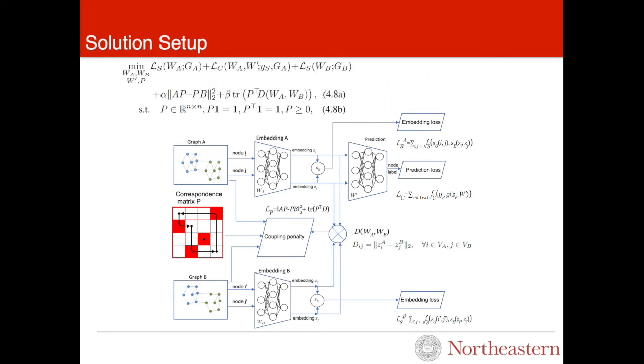Our overall objective looks like this. The objective jointly determines the embedding of nodes in two graphs by two weight parameters WA and WB. The label classifier is parameterized by weight W', and there is a doubly stochastic matrix P that enforces the nodes that are structurally similar across graphs to receive similar embeddings. Our method can be applied to all graph embedding methods.